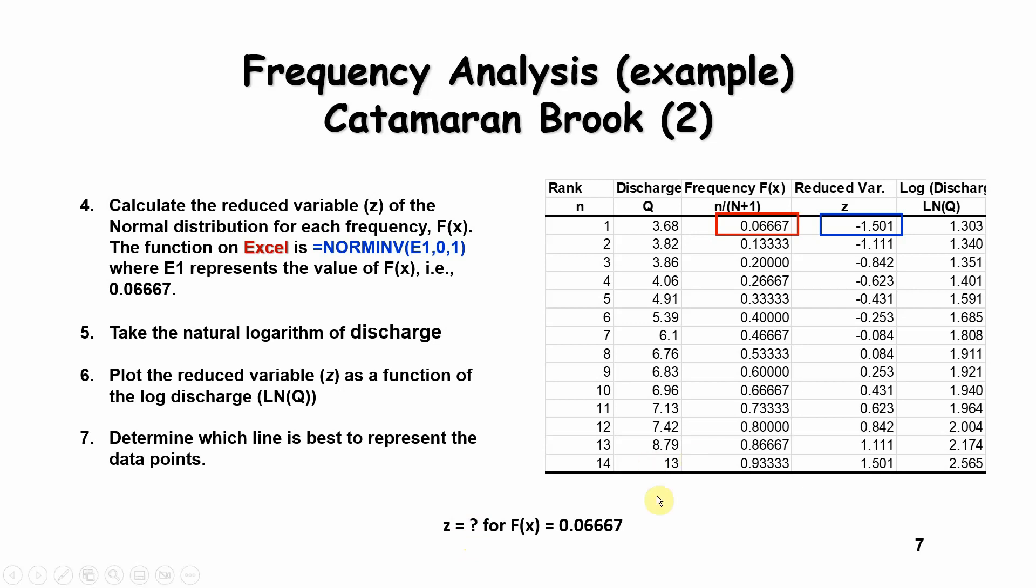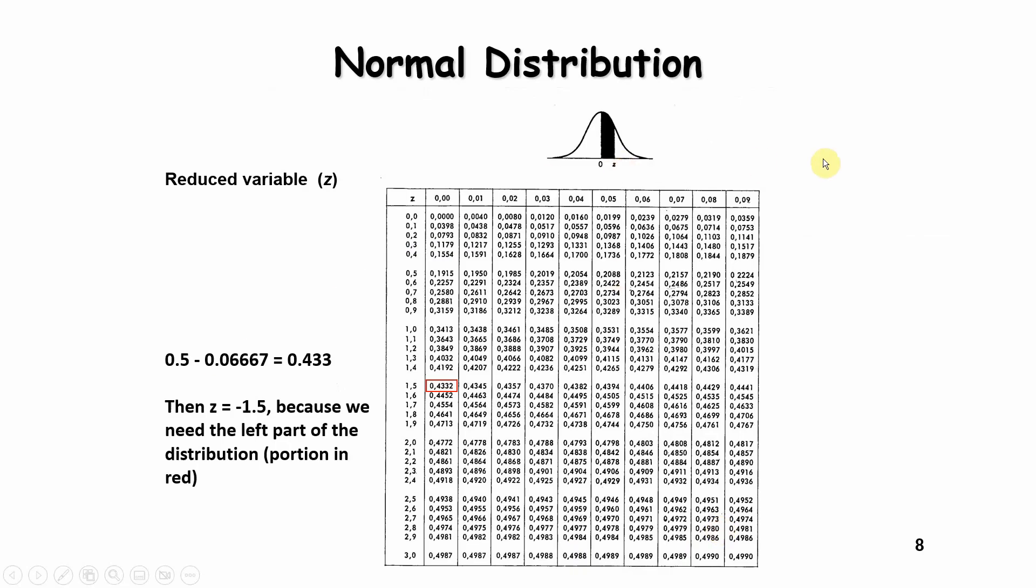For instance, in this particular case, if I'm looking for a probability of 0.067, I can just take the table here. And basically, what I'm looking at is this side of the table. So it would be 0.5 minus this probability of 0.067, which would be 0.433. And then you look up into the table at 0.433, which would be in this case, rather than being plus 1.5, it would be minus 1.5, which would give you the value. You can do this for every discharge, or you can do it in Excel, as I've mentioned before.